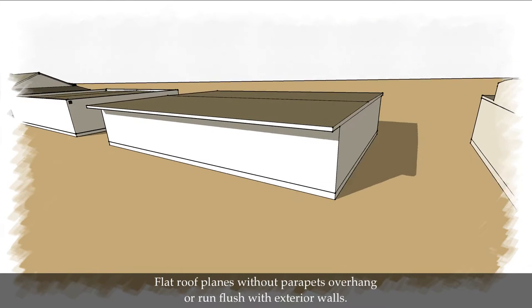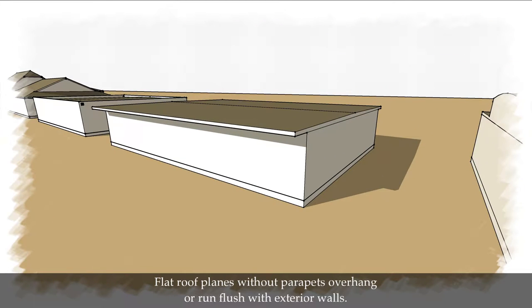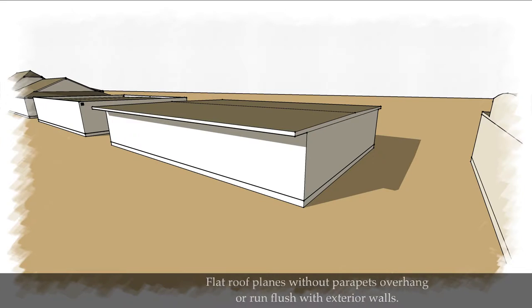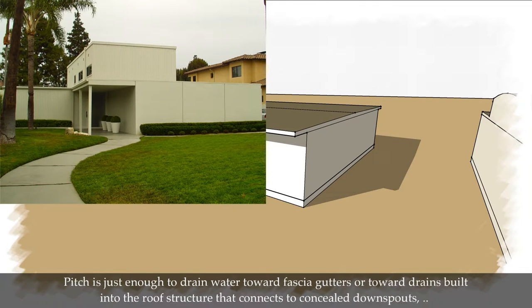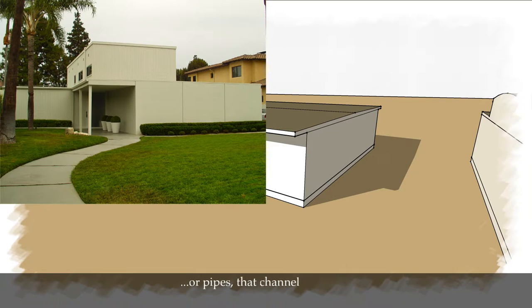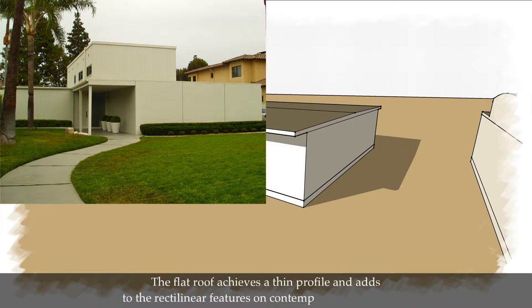Flat roof planes without parapets overhang or run flush with exterior walls. Pitch is just enough to drain water toward fascia gutters or toward drains built into the roof structure that connects to concealed downspouts or pipes that channel the water to daylight or into a drain field. The flat roof achieves a thin profile and adds to the rectilinear features on contemporary architecture.